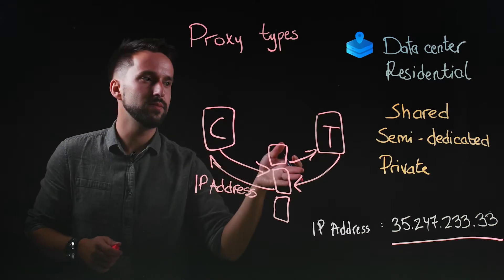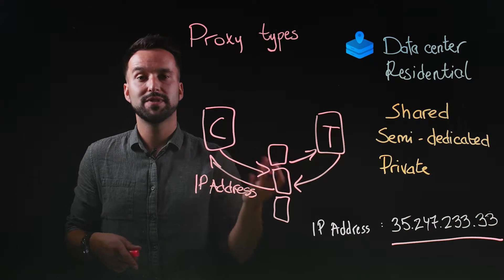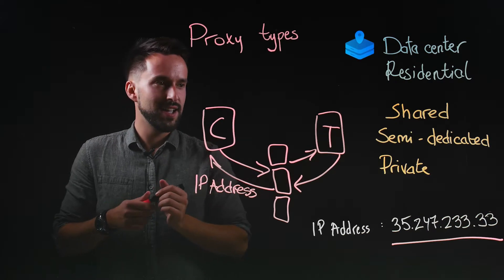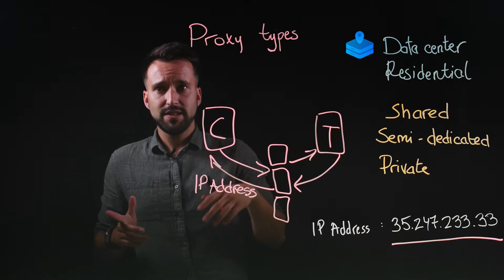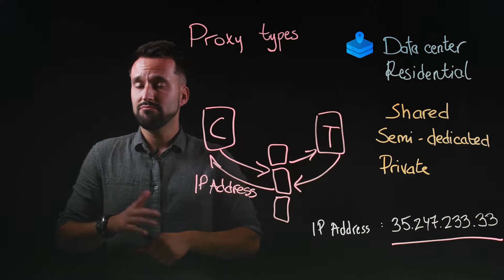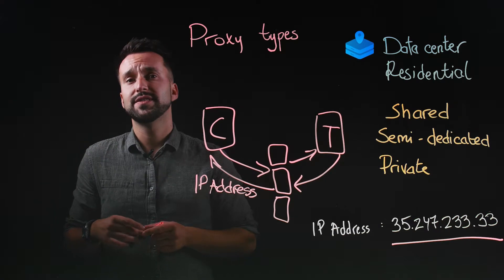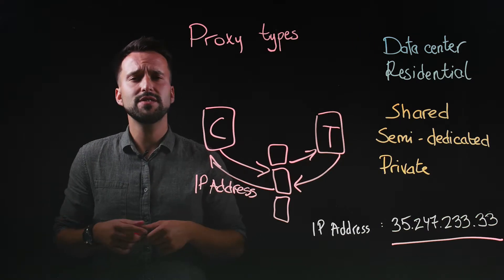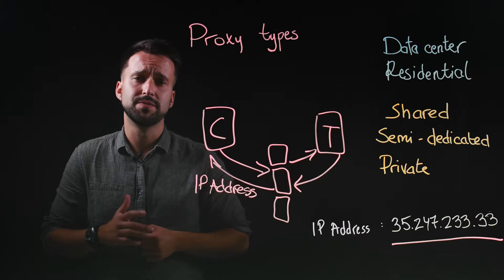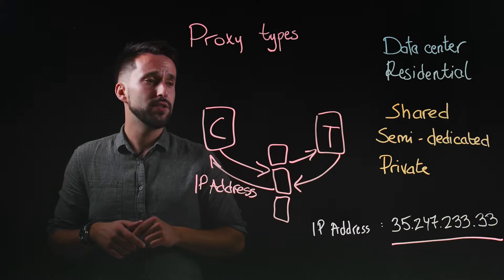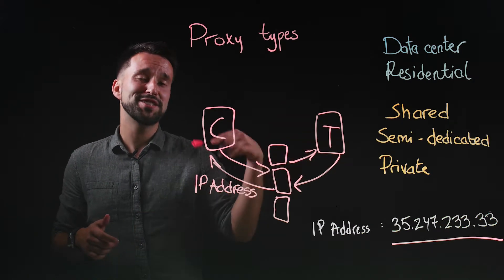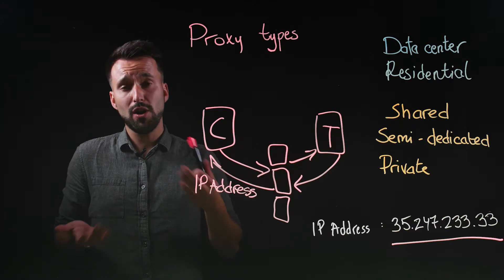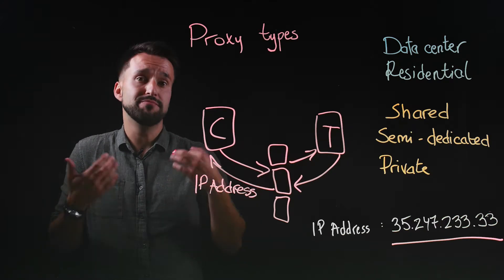That's pretty much how web scraping works in simplest terms. Datacenter proxies are fast and offer stable performance, but as mentioned, they are artificial. So websites can actually identify them and by doing so block access to their website.